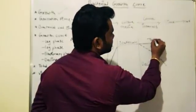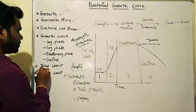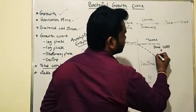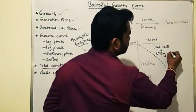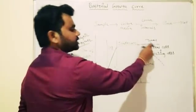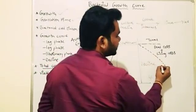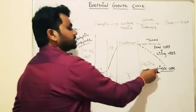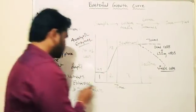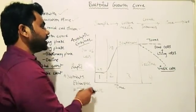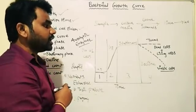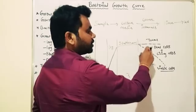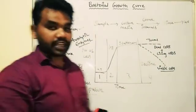The total count includes dead cells plus living cells. The other line indicates viable cells — the viable cell count decreases as time increases because nutrients are exhausted, toxic products accumulate, and autolytic enzymes are released. The viable cell count decreases over time, but total count will never decrease because total count includes dead cells plus living cells.